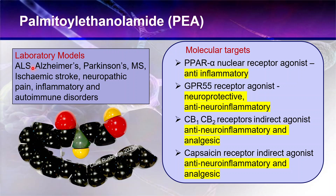The models it's been used on include ALS (motor neurone disease), Alzheimer's, Parkinson's, multiple sclerosis, ischemic stroke, neuropathic pain, and inflammatory and autoimmune disorders. It has a number of targets: it acts as a nuclear receptor agonist, in particular PPAR-alpha, where it has an anti-inflammatory action; as a GPR-55 receptor agonist, where it's neuroprotective and anti-neuroinflammatory; it has an indirect action on the cannabinoid receptors CB1 and CB2, providing anti-neuroinflammation and analgesic properties; and it's also an indirect agonist at the capsaicin receptor, where it's anti-neuroinflammatory and analgesic.